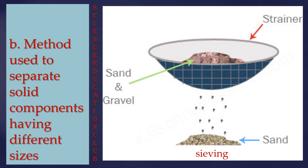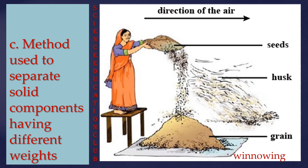Method used to separate solid components having different sizes: sieving is the method used to separate components with different sizes. Method used to separate solid components having different weights: lighter particles are blown away by air and heavier particles settle down at the bottom. This process is called winnowing.